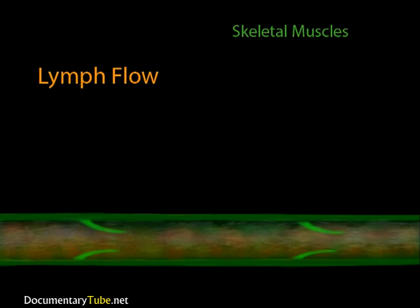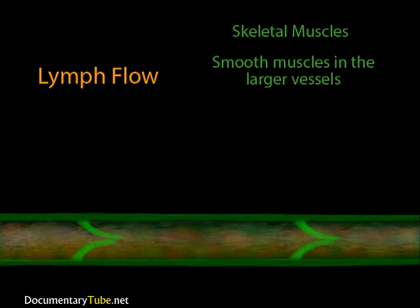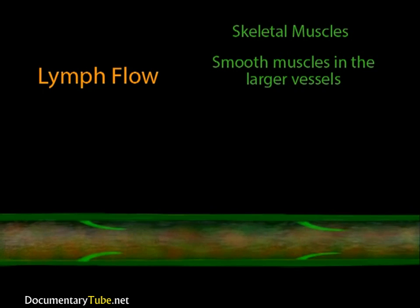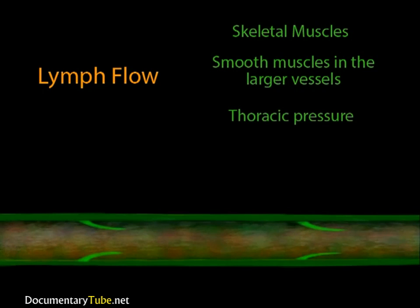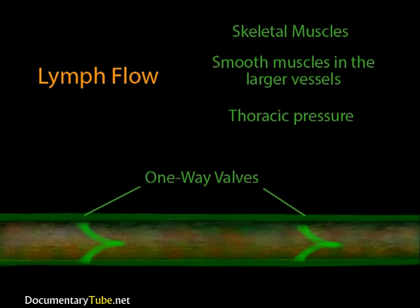In addition to the contraction of skeletal muscles, there are two other means by which lymph travels through the lymphatic system. There are smooth muscles at the larger lymph vessels, and their contraction adds to the force provided by the skeletal muscles. Also, when we breathe, pressure changes occur in the thoracic region. When the thoracic pressure drops, that tends to pull lymph into the thoracic duct. One-way valves prevent the lymph from flowing backwards.